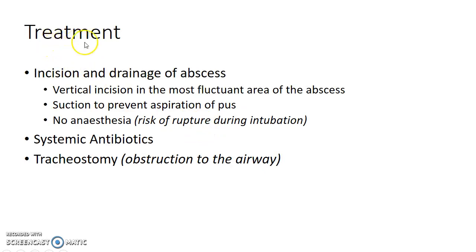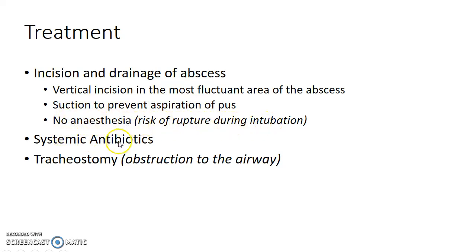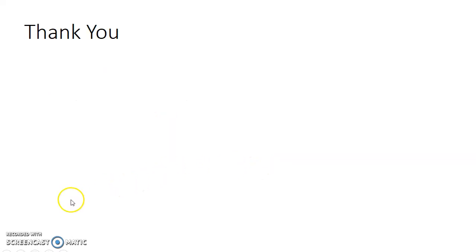To treat retrofaryngeal abscess, incision and drainage should be done. A vertical incision is given in the most fluctuant area of the abscess, and suction is done to prevent aspiration of pus. No anesthesia should be given due to the risk of rupture during intubation. Systemic antibiotics can be given, and tracheostomy can be done if there is obstruction to the airway.